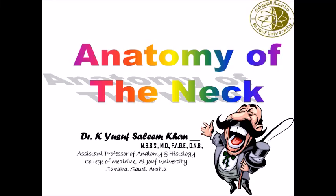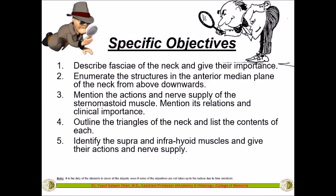Hi students, today we'll be studying about the anatomy of the neck. I'm Dr. Yusuf. These are the specific objectives followed in the College of Medicine, Al Jofun University. The first objective is to describe the fascia of the neck and give their importance. The second is to enumerate the structures in the anterior median plane of the neck from above downwards. Third is to mention the actions and nerve supply of the sternocleidomastoid muscle, its relations and clinical importance. Fourth is to outline the triangles of the neck and list the contents of each. Fifth is to identify the suprahyoid as well as the infrahyoid muscles and give their actions and nerve supply.